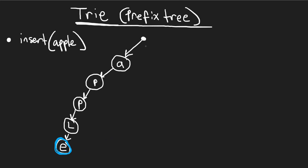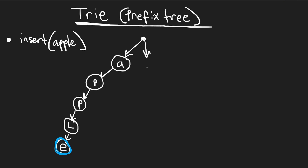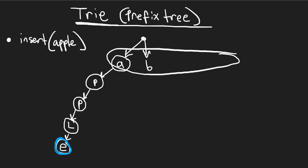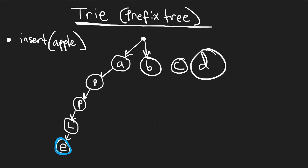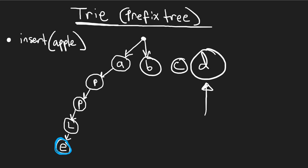This is the root — a placeholder node with no character. We have 26 characters, so potentially we could have a node at the first layer for every character: a, b, c, d, et cetera. Each one indicates where we put all the words starting with that letter — 'a' here, 'b' here, 'c' here, and so on.